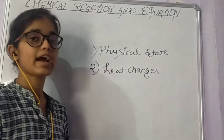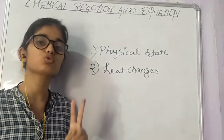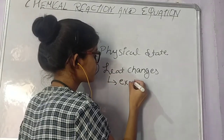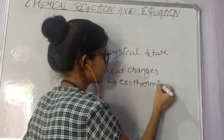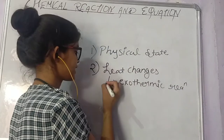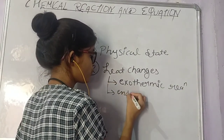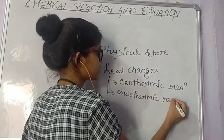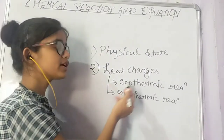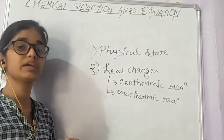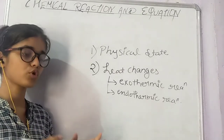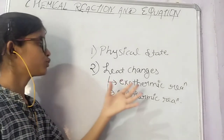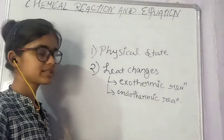If we classify reactions on the basis of heat, there are two types: exothermic reactions and endothermic reactions. An exothermic reaction is one in which heat is released. When reactants become products, heat is also released. We call this an exothermic reaction.